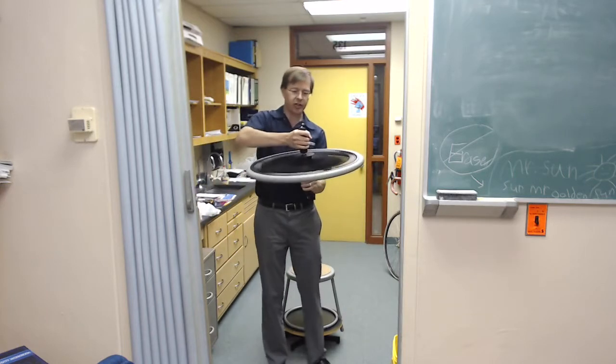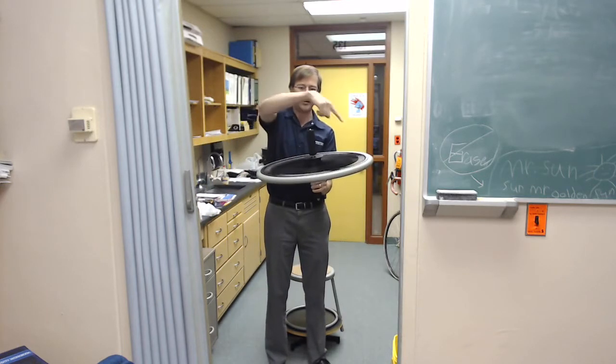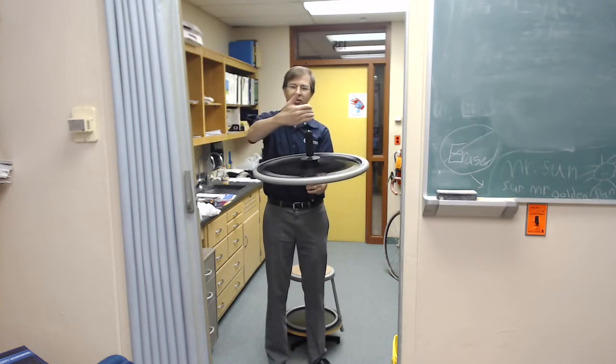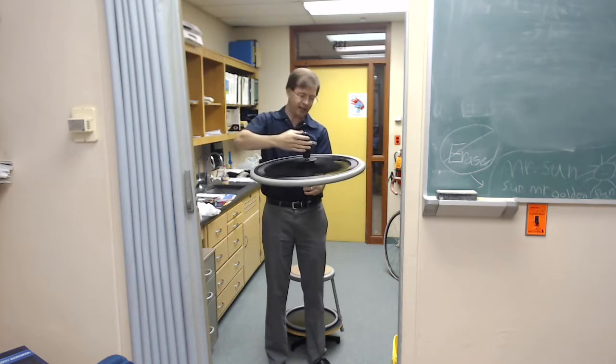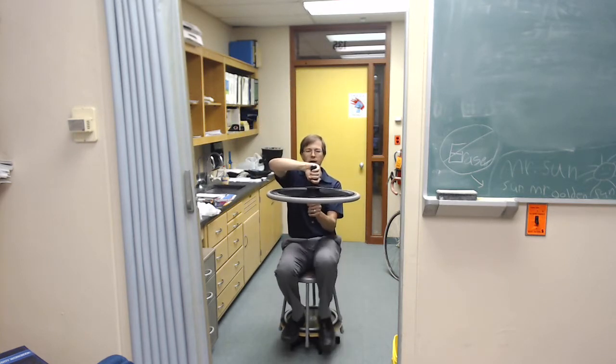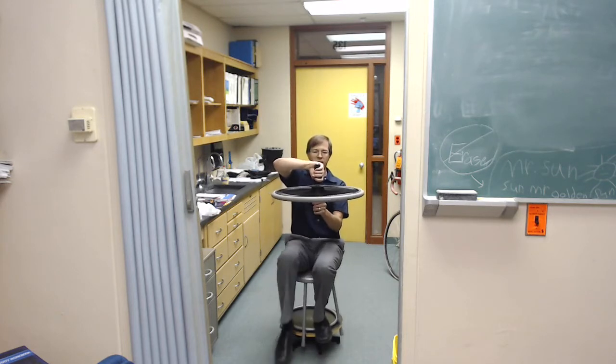The wheel is currently rotating this way. So the angular velocity by our right-hand rule, curl your fingers around, points upward at the moment. I'm going to sit on the stool, low-friction stool, sitting still, the wheel is just spinning there.